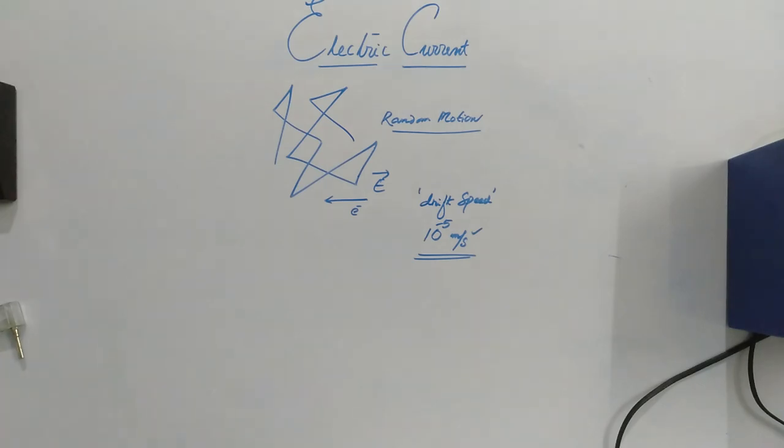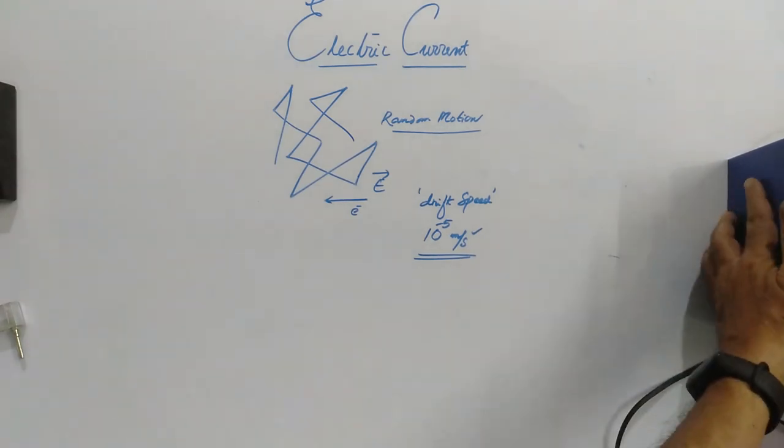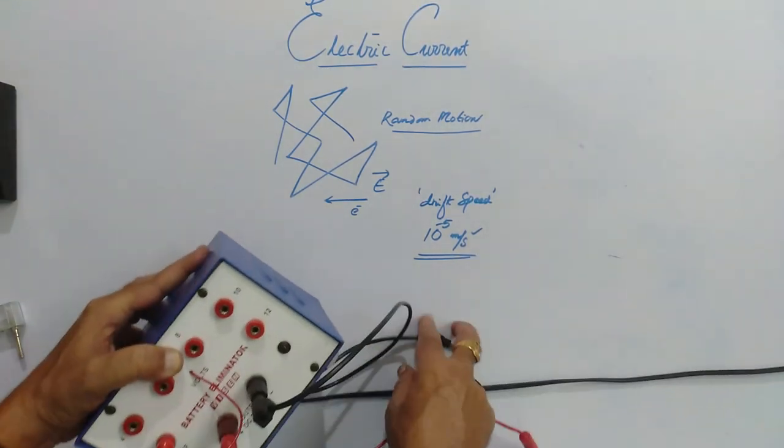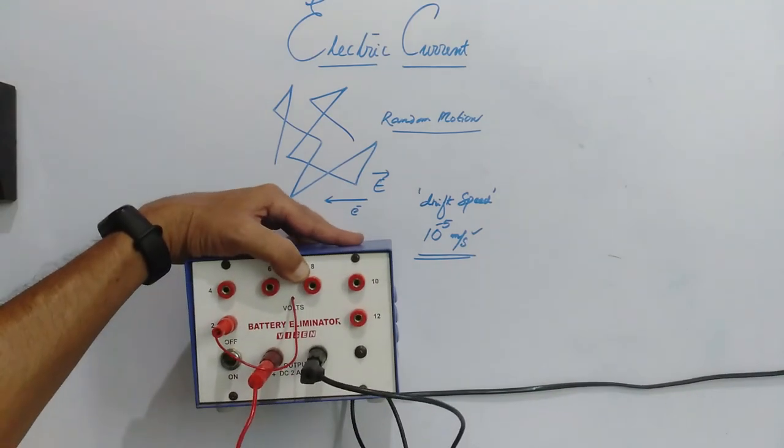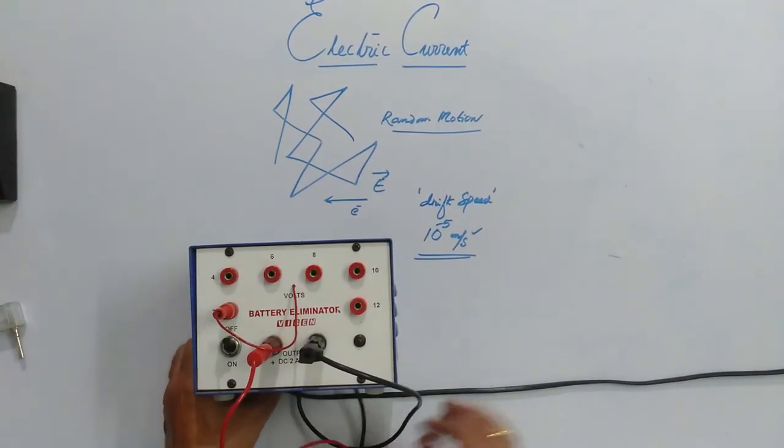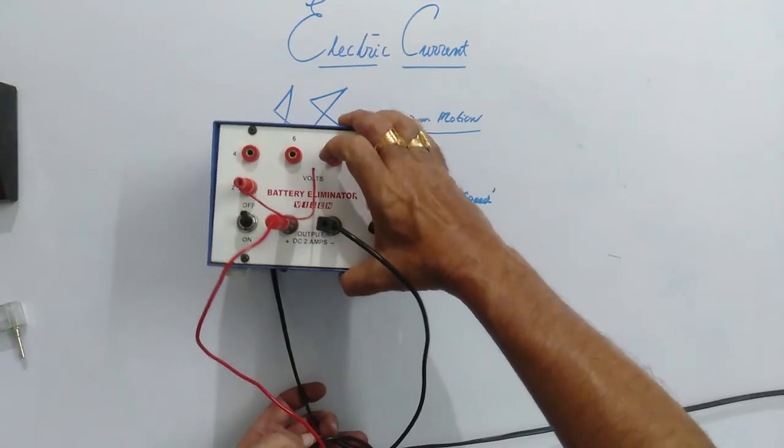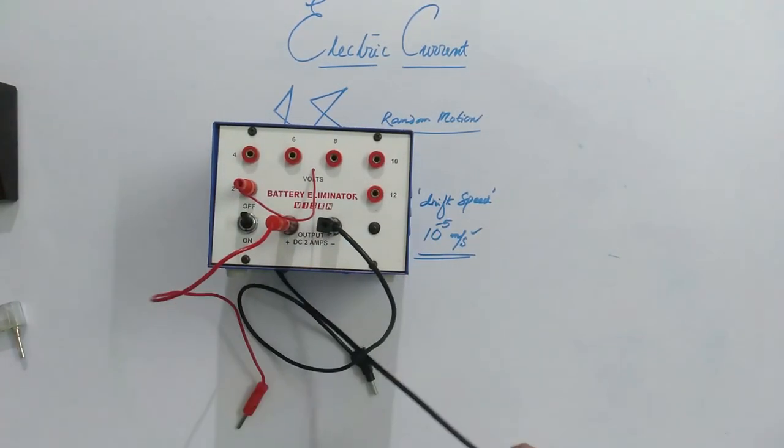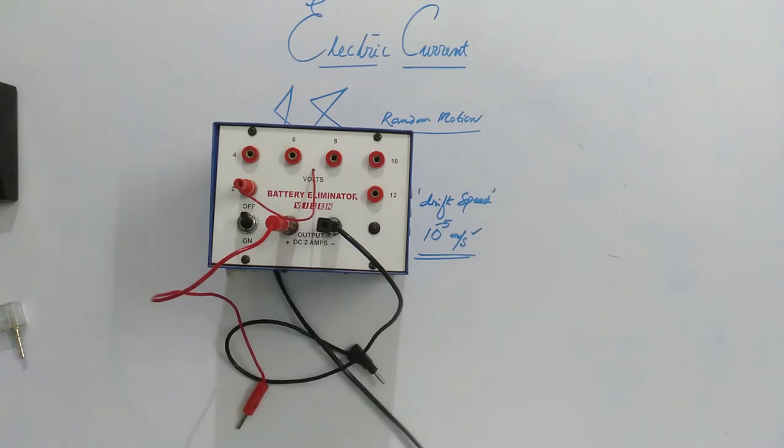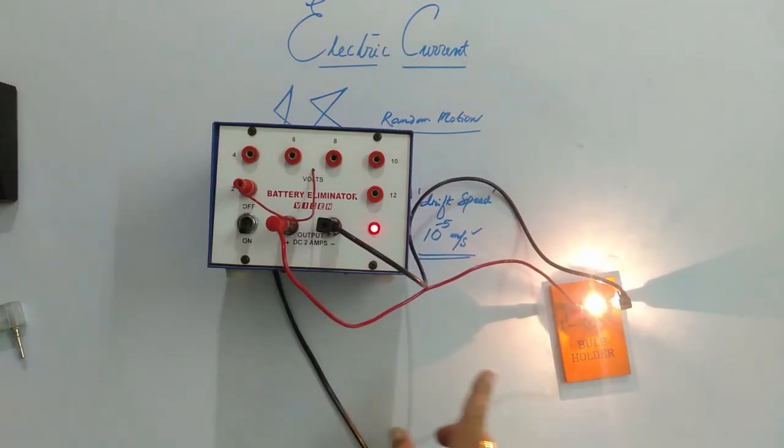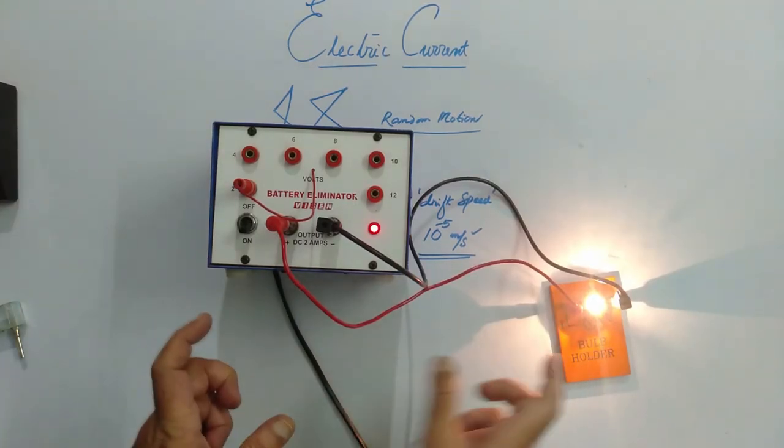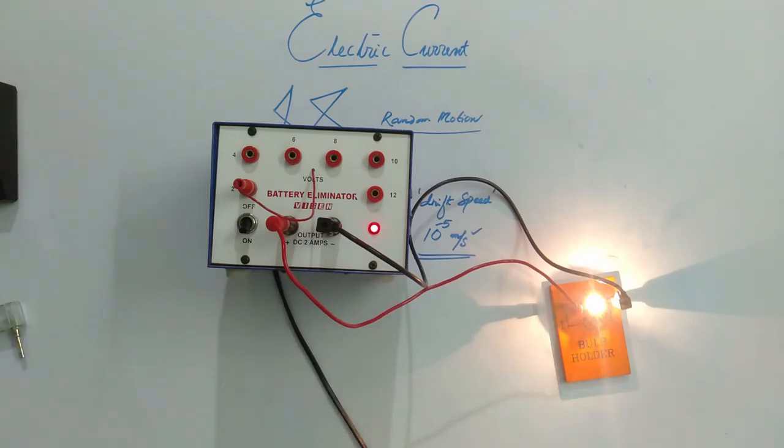Then the doubt exists that if it is such, then how come here I have taken again our old setup. That is a battery eliminator. If I switch on, with no lag, the electric bulb glows.